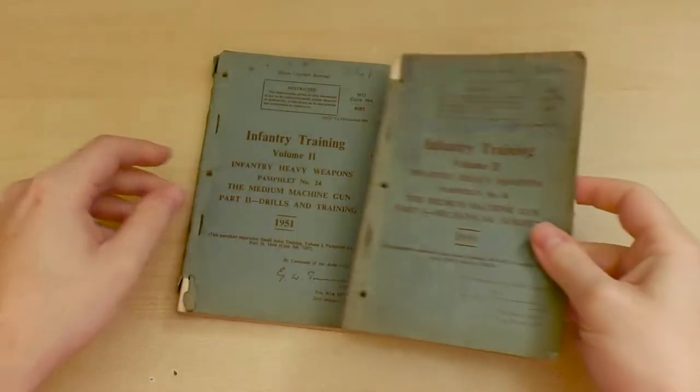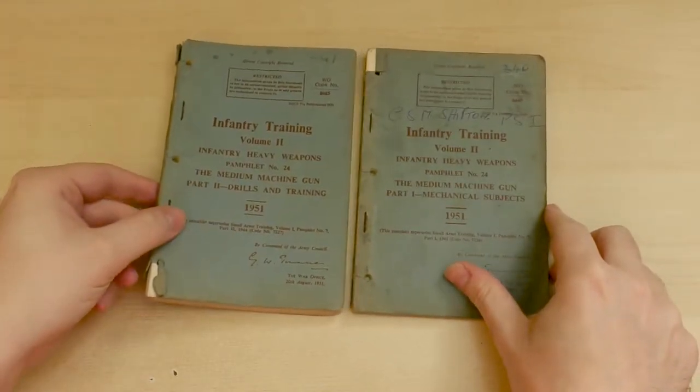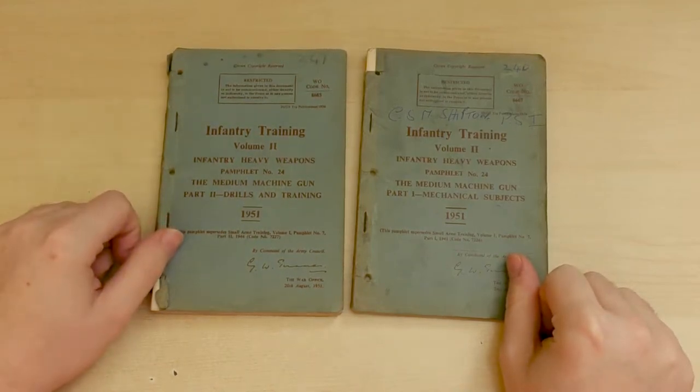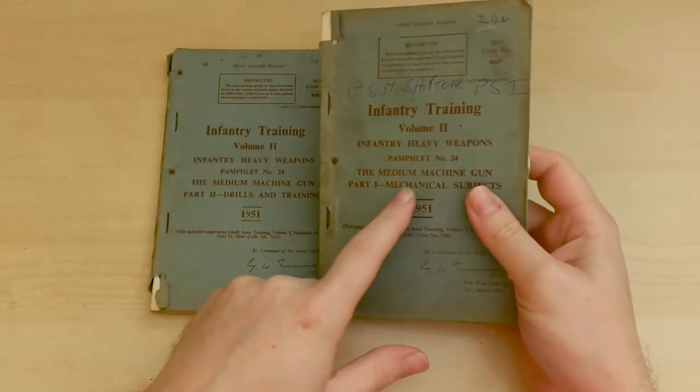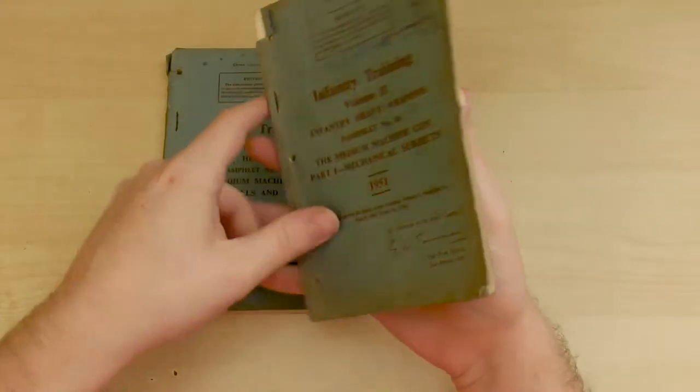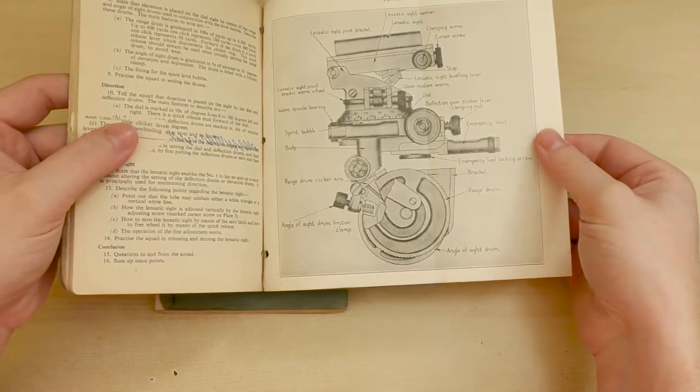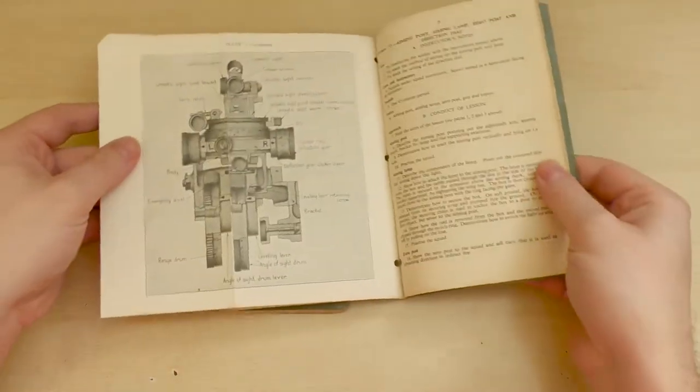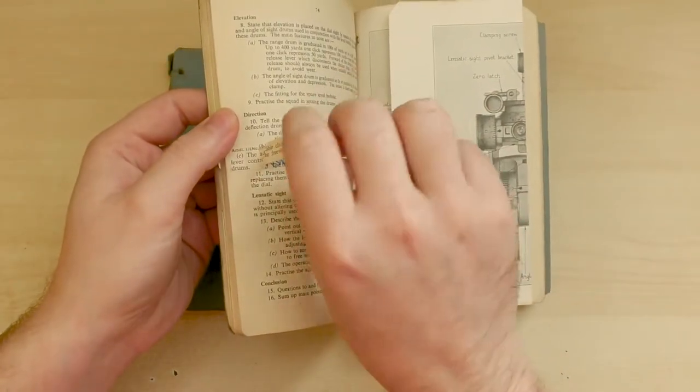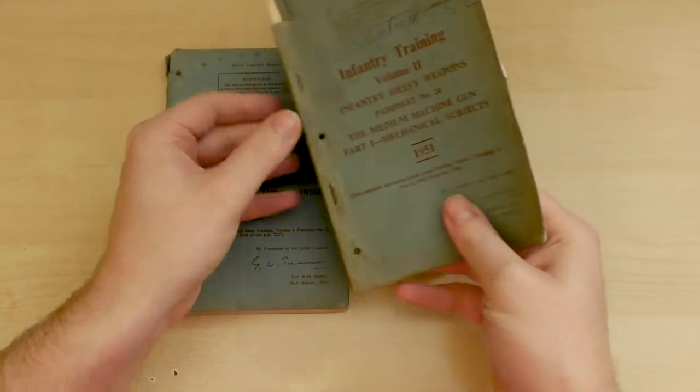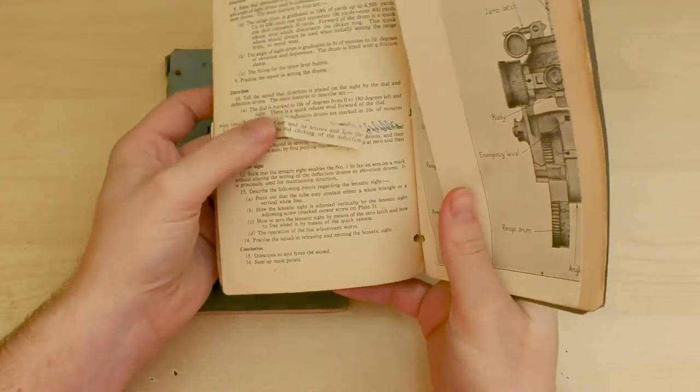Okay, so these are a couple of copies of the Vickers Medium Machine Gun manual from 51, which I think might be the last Vickers manual that was put together. We've got part 1, which covers mechanical subjects, and part 2, which looks at drills and training. This one has had its amendments pasted in. We can see where CSM Shipton has scribbled out the incorrect bits and added in his amendments.